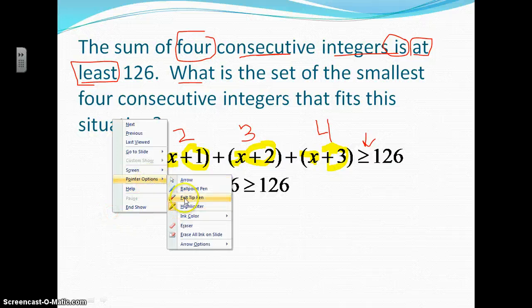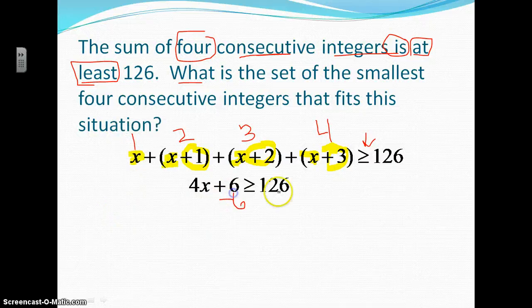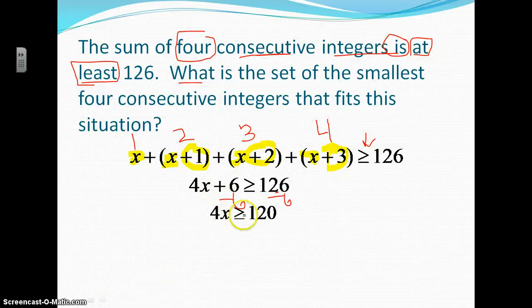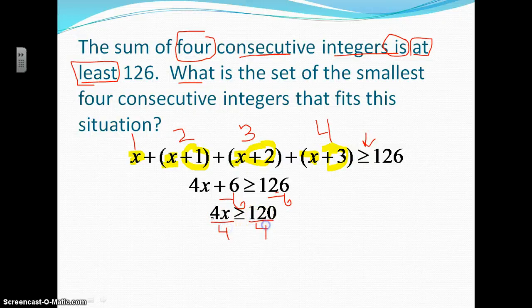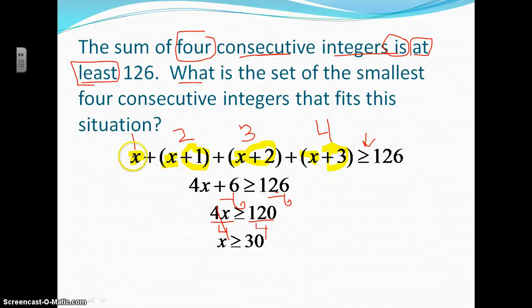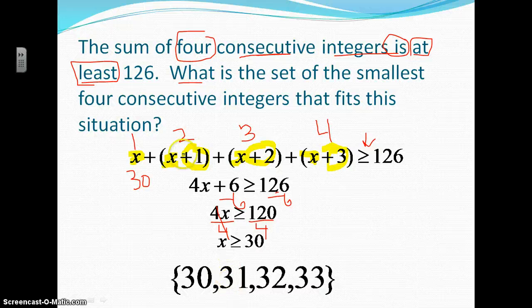Now I'm going to subtract 6 from both sides, giving me 4x is greater than or equal to 120. Then I divide by 4, and x is greater than or equal to 30. So my first number is 30, my next number is 31, then 32, and my last number is 33.